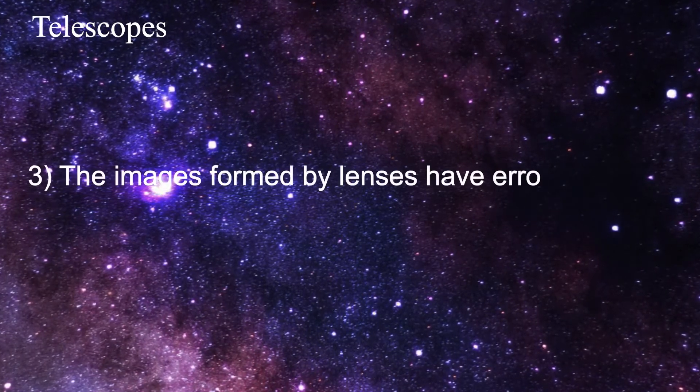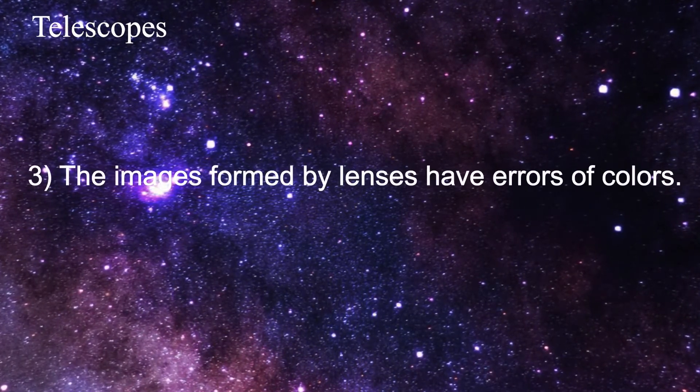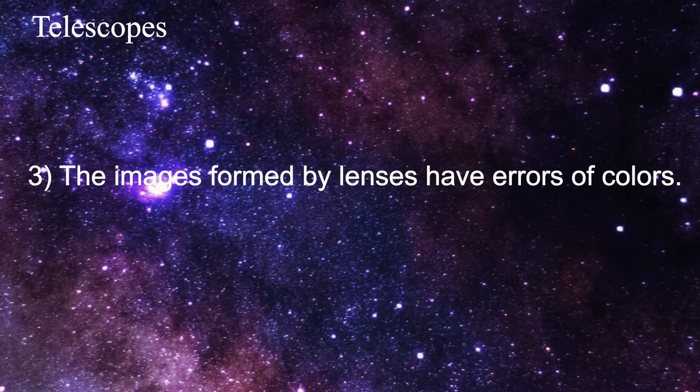Third, the images formed by lenses have errors of colors. This is called chromatic aberration.